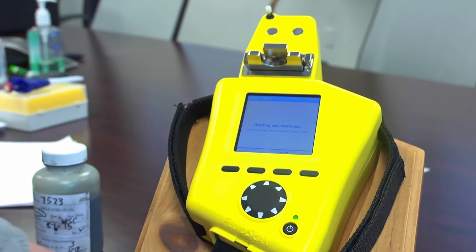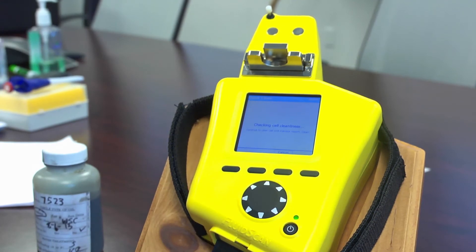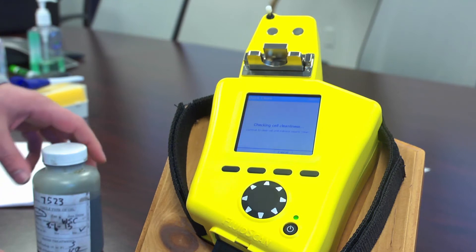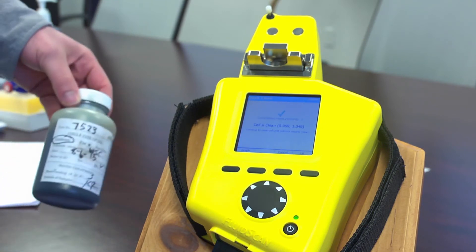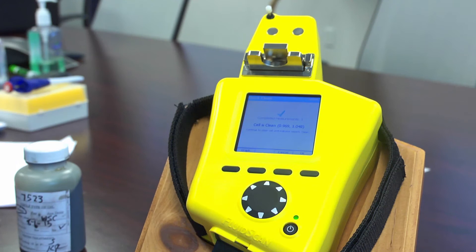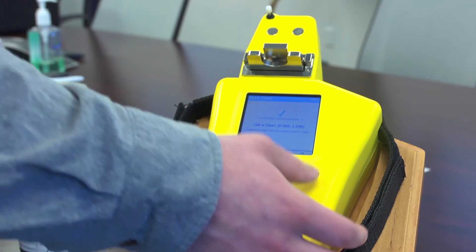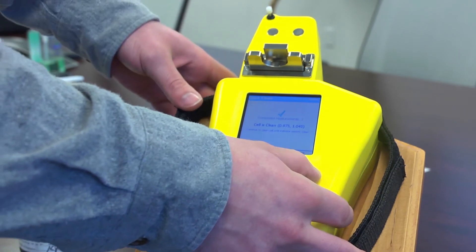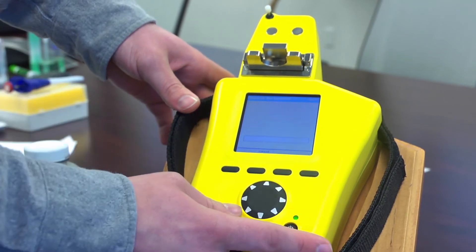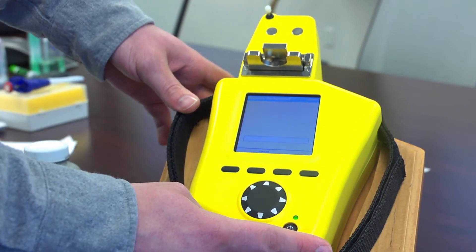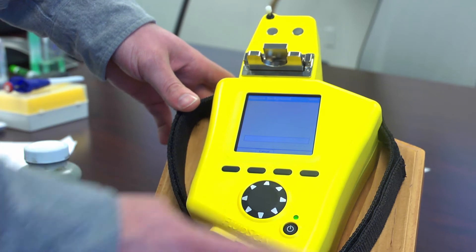The background is to basically measure the background noise inherent in the unit and it will then subtract this after the sample is taken to give an actual result of what the absorbance is. Once it is done we hit OK and it is going to measure the background.